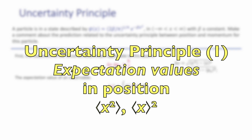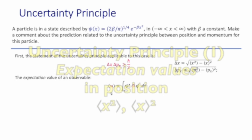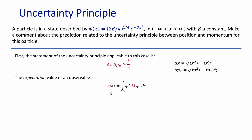Since we have to calculate expectation values of observables — our observables being both the position and the momentum — recall the general expression for the expectation value of an observable. The expectation value means inserting the operator corresponding to that particular observable into the expression of the probability density, where it acts on the function directly to its right. This operator changes depending on the kind of observable being calculated.